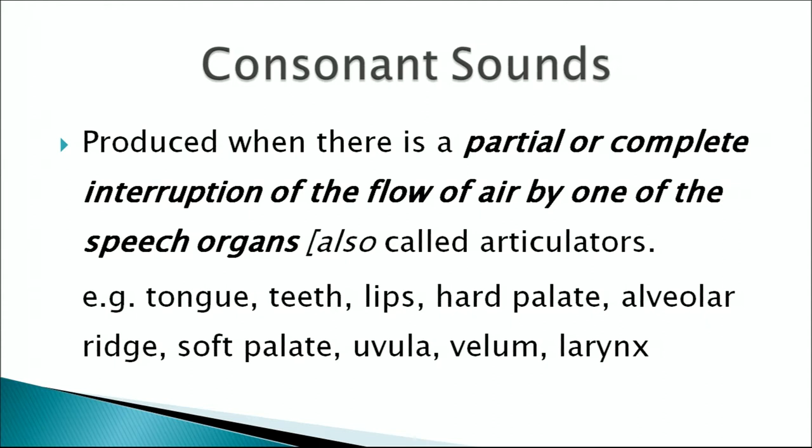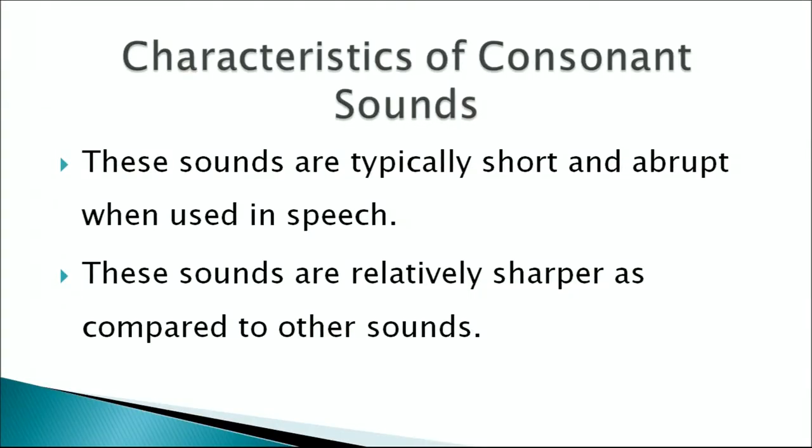When air is pressed from the lungs and passes through the vocal tract and reaches the oral tract, there is some obstruction or stoppage by the tongue, teeth, lips, hard palate, alveolar ridge, soft palate, uvula, velum, and the larynx. Consonant sounds are typically short and abrupt — for example, p, b, t, d, s, sh, j — and are relatively sharper compared to other sounds.